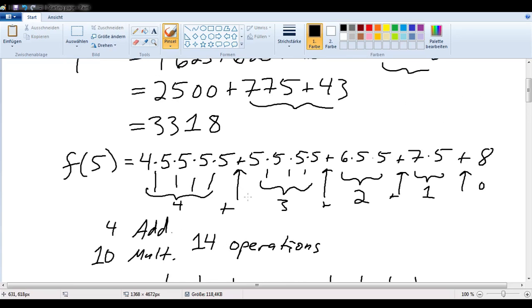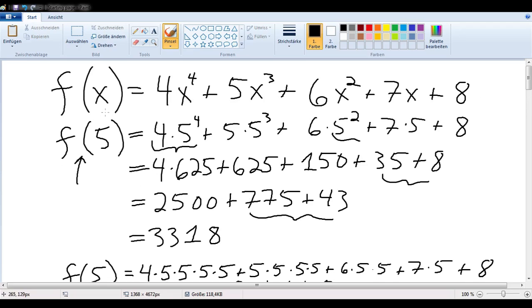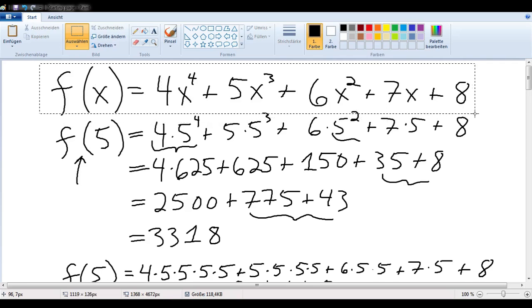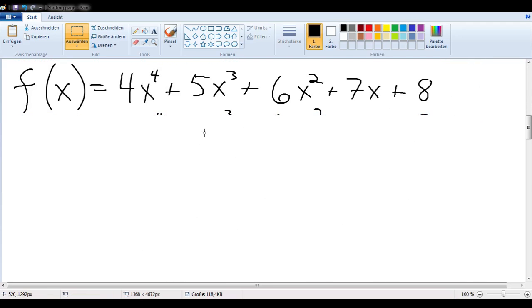So now, the question presents itself whether we could somehow use this principle to reduce the number of times we have to multiply to compute f of x. So let's see if we can do that. So f of x looks like this. Why don't we factor out an x? And we see, well, there's a problem. We can't factor out an x because x is not a part of this term. Maybe we could just leave that off, and we'll factor it out anyway. So that would be x to the third plus 5x squared plus 6x plus 7, and then we just have to add our 8 on to the end.